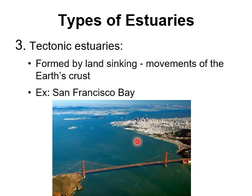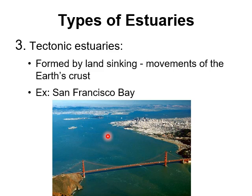Tectonic estuaries form as a result of tectonic activity — land sinking as pieces of the earth's crust move around. San Francisco Bay is a great example. The entire bay formed from the land there sinking because the San Francisco area is very tectonically active — the fault line between the North American plate and the Pacific plate runs very close to San Francisco. That's why there was a big earthquake in the 1980s that interrupted a World Series game, and an even bigger earthquake in the early 1900s that destroyed much of the city.